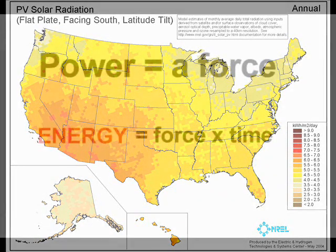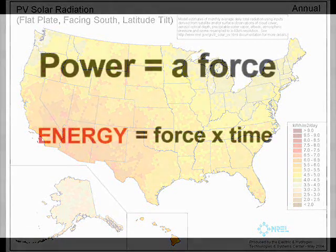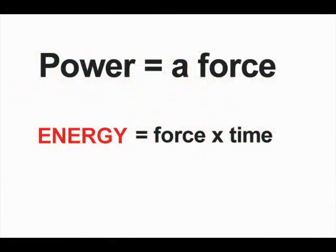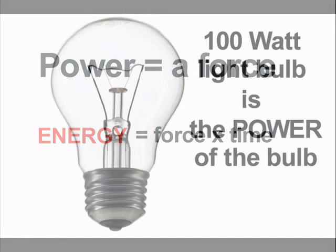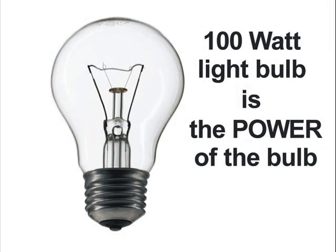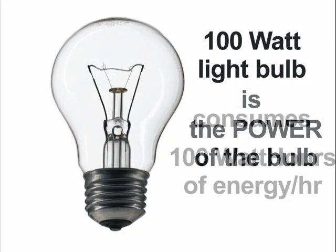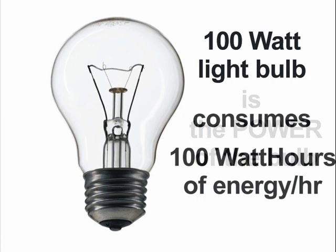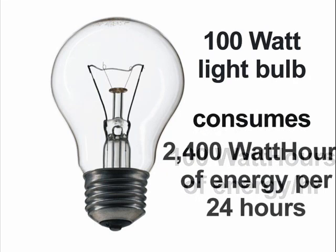It's important not to confuse the concept of power with energy. Power is a measure of force, and energy is a force applied over a period of time. For example, a light bulb with a power rating of 100 watts consumes 100 watt-hours of energy in one hour, but the same light bulb consumes 2,400 watt-hours of energy over a period of 24 hours.